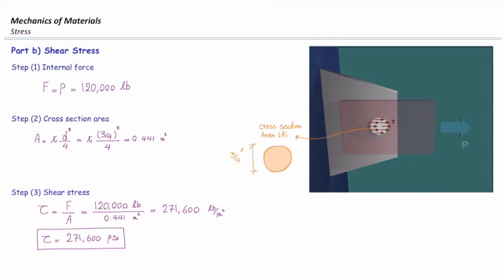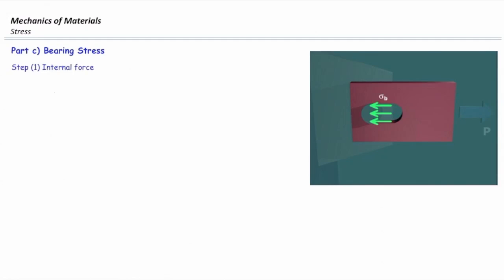Any questions for this part? Alright. Last step, determining bearing stress. The same amount of force is applied, 120,000 pounds. The cross-section area is tricky. Listen very carefully to this part. What is the area that I need to consider in my calculation?